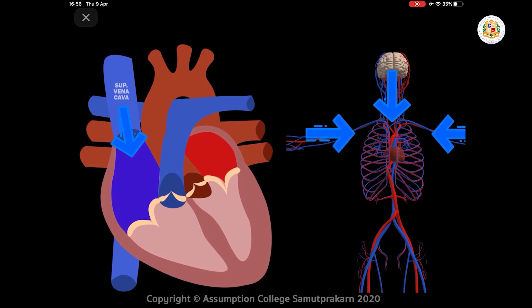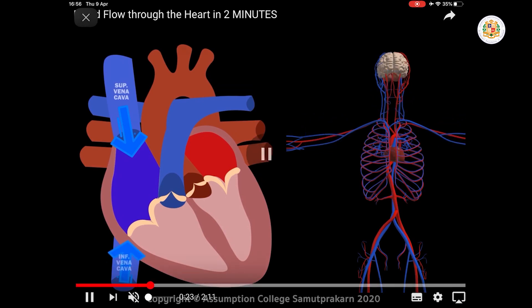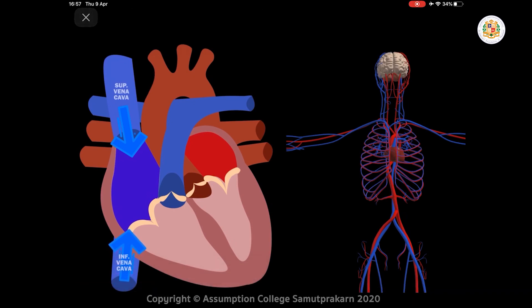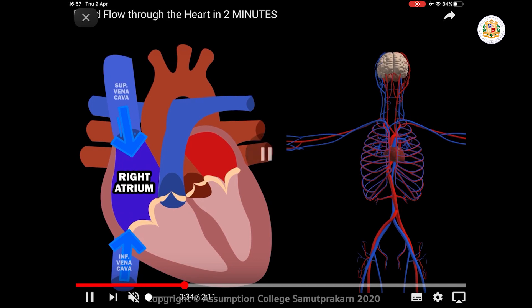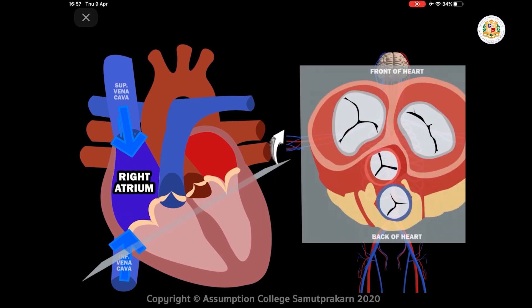Deoxygenated blood from the upper part of the body passes through the superior vena cava, and deoxygenated blood from the lower part of the body passes through the inferior vena cava. From both the superior and inferior vena cava, blood flows to the right atrium, which is the upper chamber on the right side of the heart.